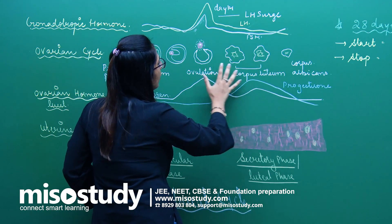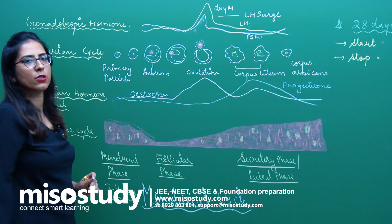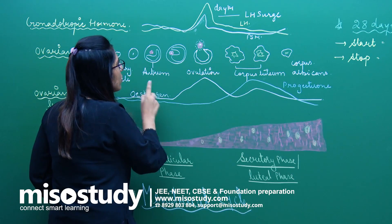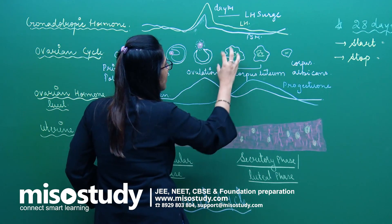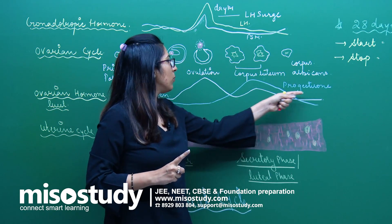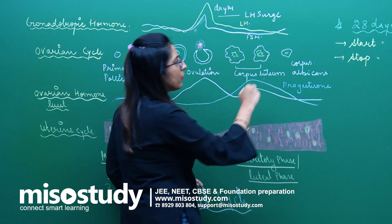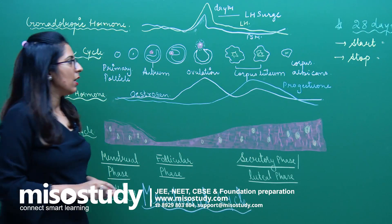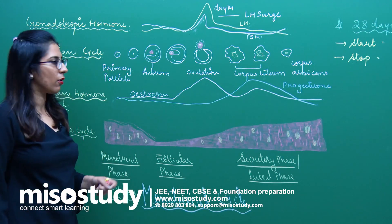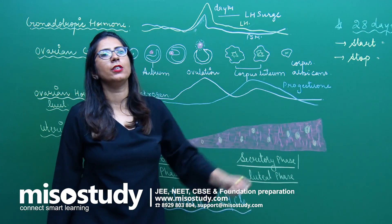Whatever is left behind after oocyte release forms the corpus luteum, and corpus luteum formation is also due to estrogen. The corpus luteum causes an increase in the concentration of progesterone. Estrogen helps in the formation of the endometrium, whereas progesterone helps in the maintenance of the endometrium so that it remains intact, ready for implantation of the zygote.